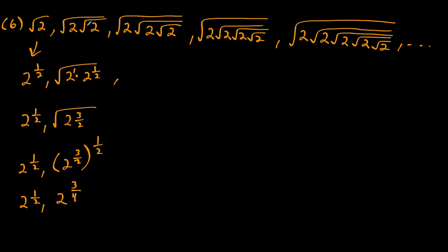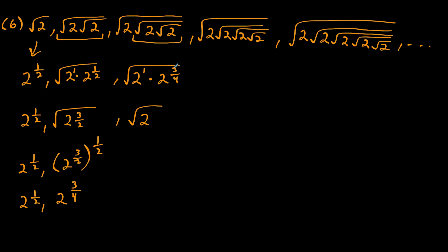Continuing the pattern for the third term: we have square root of two times the trailing piece, which equals two to the three fourths. So we have square root of two times two to the three fourths — adding one plus three fourths gives seven fourths — all raised to the one half power, which gives two to the seven eighths. The fourth term similarly works out to two to the 15 over 16.